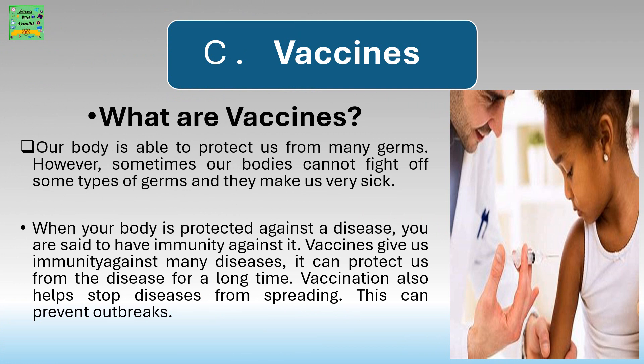What are vaccines? Our body is able to protect us from many germs. However, sometimes our body cannot fight off some types of germs and they make us very sick. When your body is protected against a disease, you are said to have immunity against it. Vaccines give us immunity against many diseases and can protect us from the disease for a long time. Vaccination also helps stop diseases from spreading, which can help prevent outbreaks.